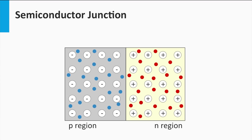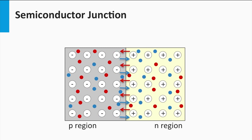Now we first consider the situation that this p-n junction is in the dark and is in thermal equilibrium. What will happen? How will the charge carriers be distributed over the p-region and the n-region? On the left we have a majority of holes; on the right we have a majority of electrons. The p-n junction has an enormous density gradient close to the interface between the p- and n-region. Diffusion is driven by density gradients.